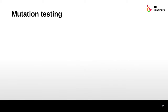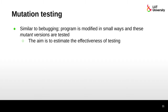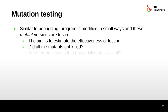Mutation testing is similar to be-bugging. The program is modified in small ways and these mutant versions are then tested. The aim is to estimate the effectiveness of testing. One way to measure this is whether all the mutants got killed — if all mutants are killed, the testing is successful.